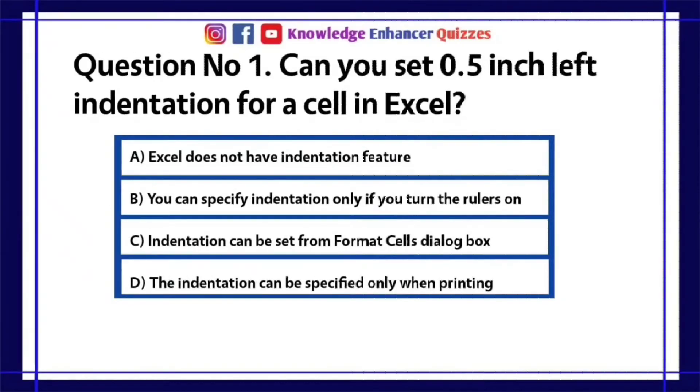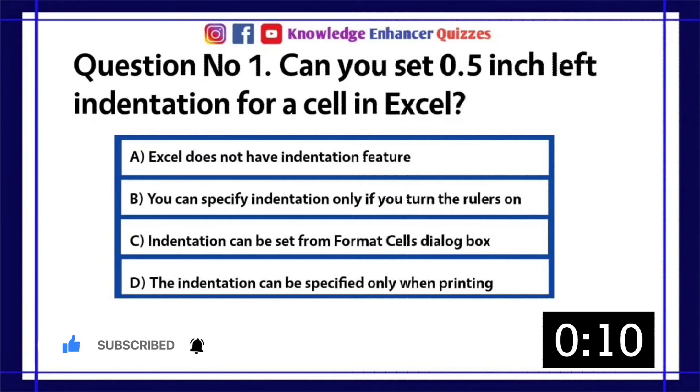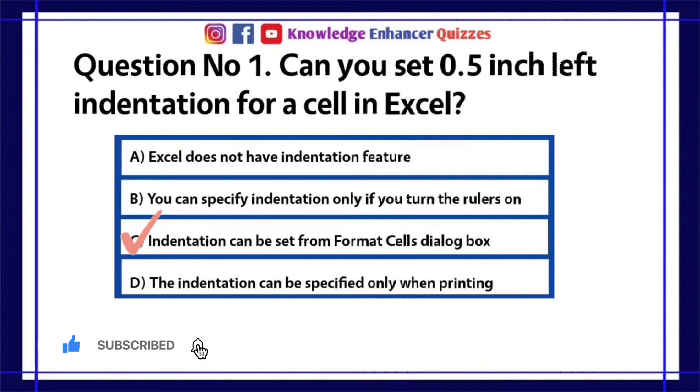Question number 1. Can you set 0.5 inch left indentation for a cell in Excel? A. Excel does not have indentation feature. B. You can specify indentation only if you turn the rulers on. C. Indentation can be set from format cells dialog box. D. The indentation can be specified only when printing. Option C is the right answer.